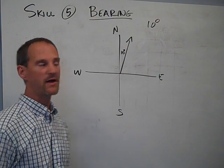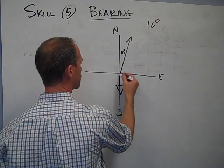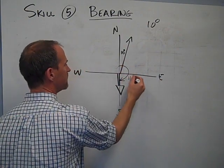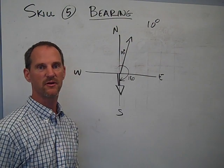If we're at a bearing of 180 degrees, we're aiming directly south. We're heading at 180 degrees from north, going in a clockwise direction.